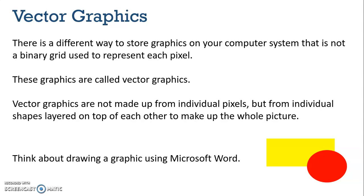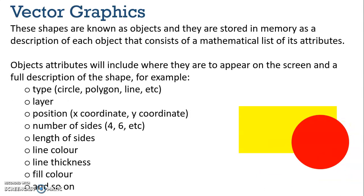The best way to describe this is to think about drawing an image in Microsoft Word or Microsoft PowerPoint, where you can draw pre-loaded images. If you go to Insert Shape and draw a rectangle and a circle, as I've done here, that is an example of a vector graphic. These shapes are known as objects and are stored in memory as a description of each object consisting of a mathematical list of its attributes. The object attributes include where they are to appear on the screen and a full description of the shape — for example, the attribute 'type' is what shape it is, so here the type is a rectangle and a circle.